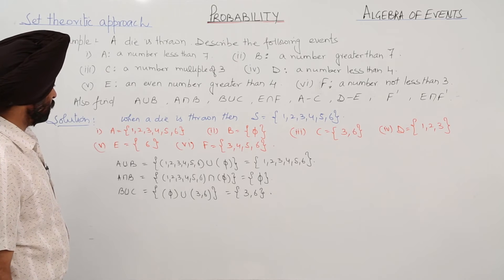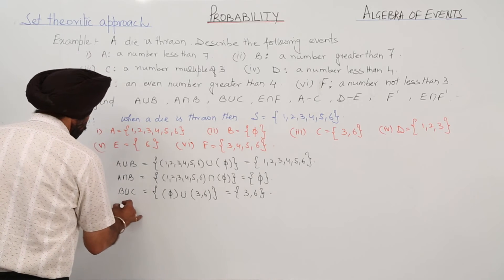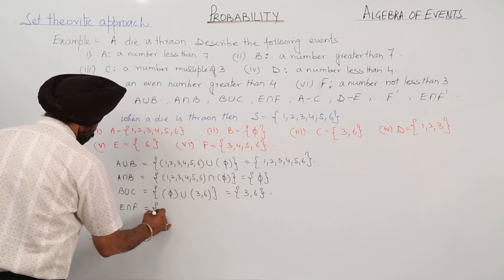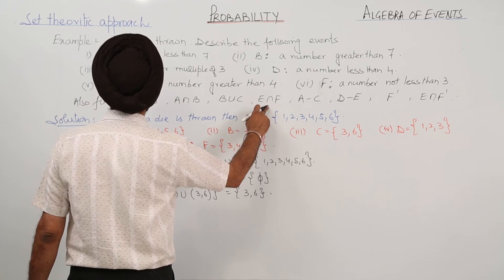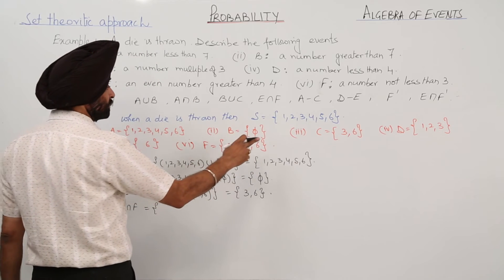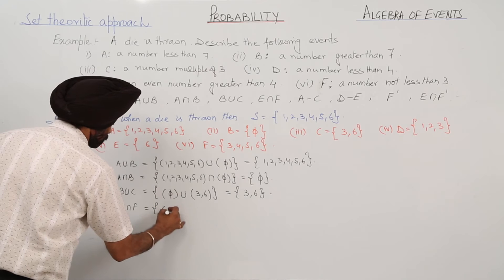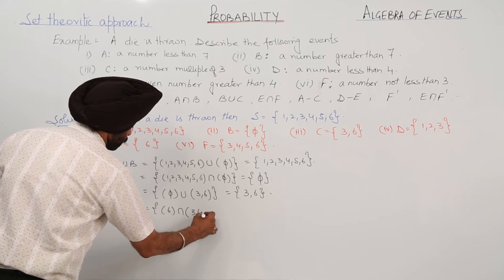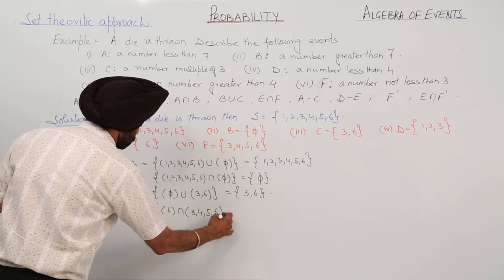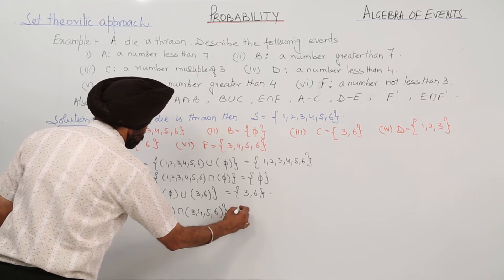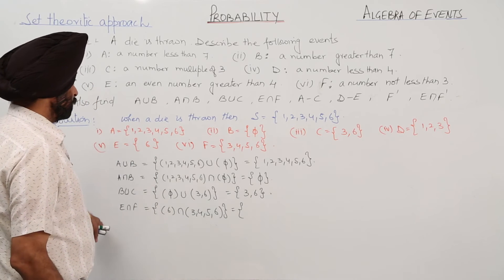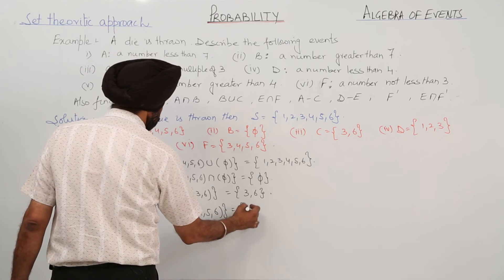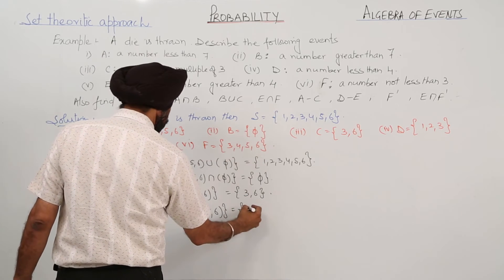Then we are having E intersection F. E is {6} and F is {3, 4, 5, 6}, so the result of E intersection F is {6}.